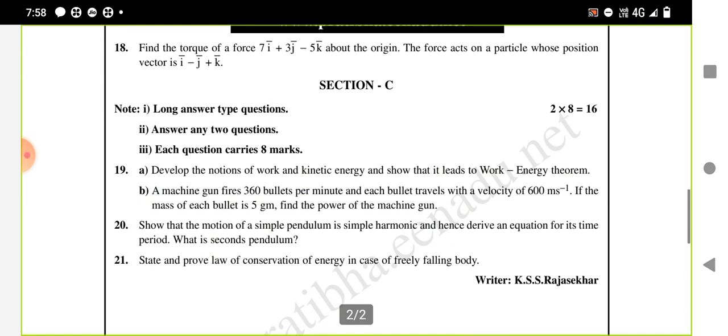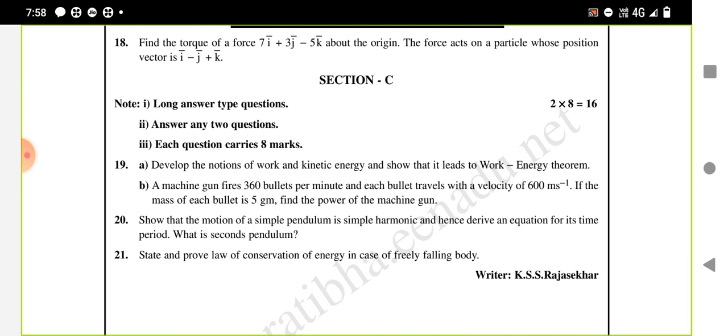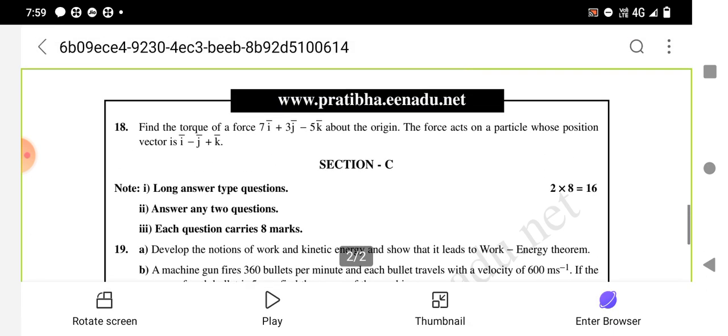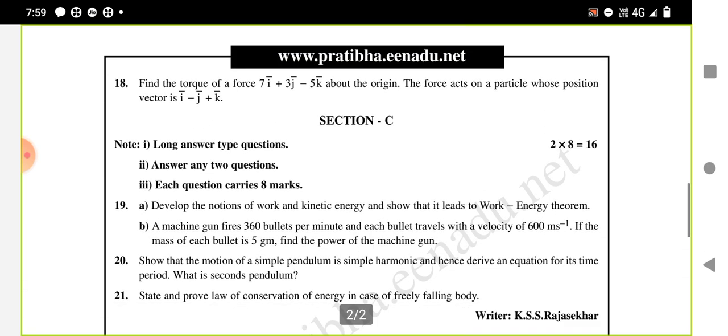The 18th question: find the torque of a force about the origin. The force acts on a particle whose position vector is i plus j plus k. So you need to calculate torque, which is R cross F, where R is i plus j plus k and force is given.